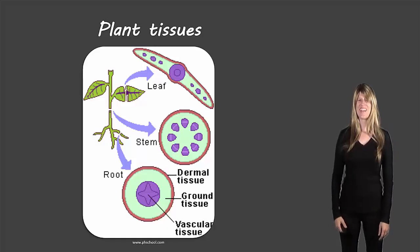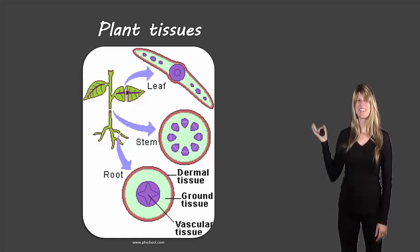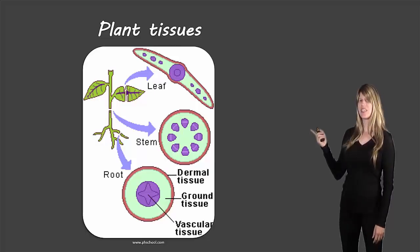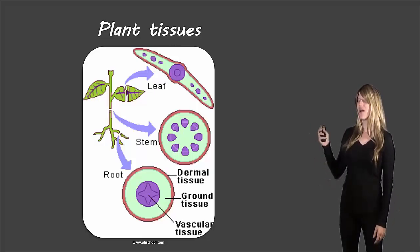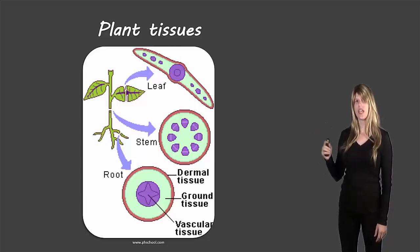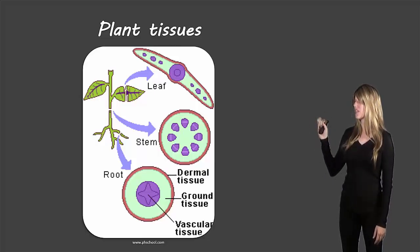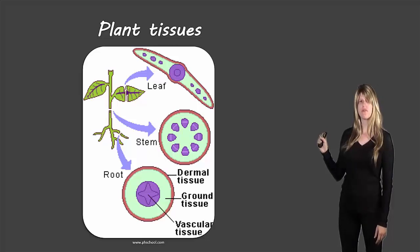Hello students, Ms. Swanson here and today we're taking a look at plant tissues. I chose this picture here because it actually shows three of the four main tissues and how they look slightly different in different areas of the plant. You can see there's dermal tissue, ground tissue, and vascular tissue.